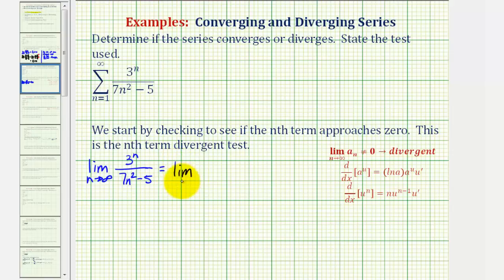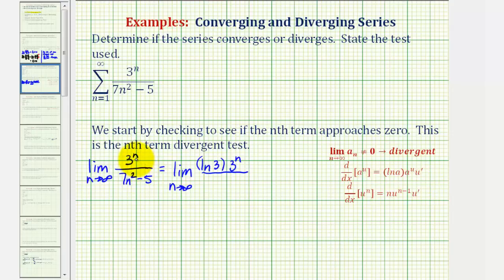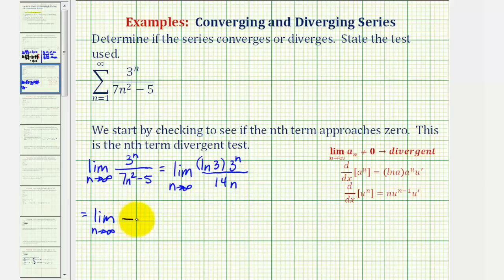So this would give us the limit as n approaches infinity. The derivative of three raised to the power of n, with respect to n, we can find using this formula here, so we'd have natural log three times three to the power of n. We don't have to apply the chain rule because the derivative of n with respect to n would just be one. And the derivative of seven n squared minus five would just be fourteen n. Notice in this form, again, both the numerator and denominator approach infinity, so now we'll apply L'Hôpital's rule again. So this would be equal to the limit as n approaches infinity of the derivative of the numerator divided by the derivative of the denominator. Natural log three is a constant, and then the derivative of three to the n is, again, natural log three times three to the n. And the derivative of fourteen n is just fourteen.